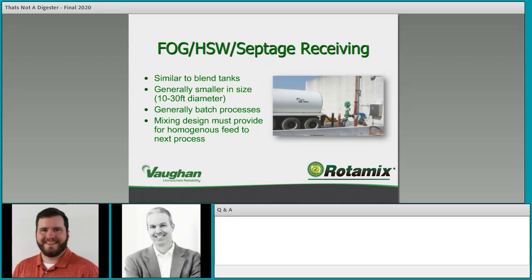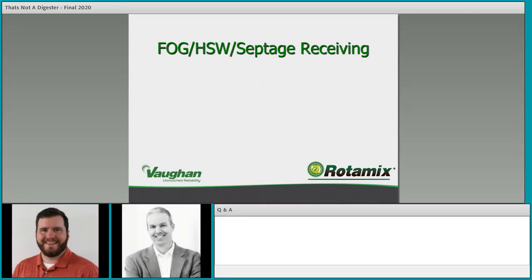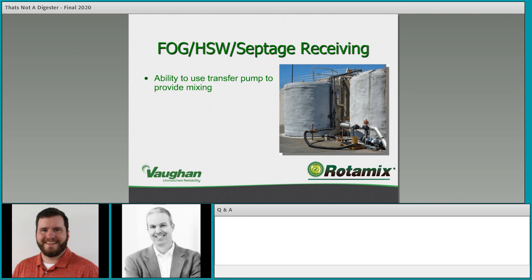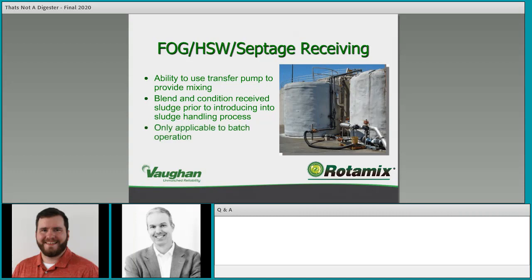Your mixing design must provide for homogeneous feed to the next process. If you're feeding a blend tank, you don't want to hit it with a slug of something nasty — you want to blend it as much as possible and make sure you're cycling through your batches. We provide externally mounted adjustable stainless steel nozzles that can be mounted to the external piping of a tank, especially useful for above-ground small fabricated tanks — steel or poly. The pump can also be used as a transfer pump.